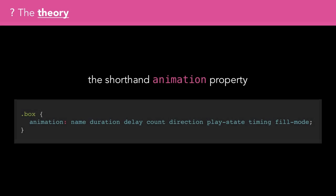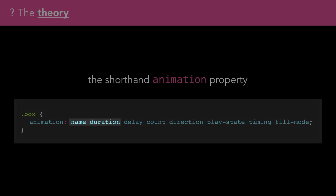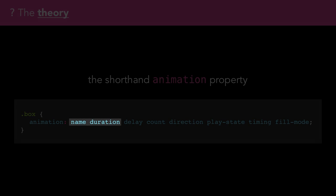Finally, animation-fill-mode determines how styles are applied before and after the animation. These eight properties can be combined into a shorthand animation property. The only required properties for an animation to be visible at least once are animation-name and animation-duration.